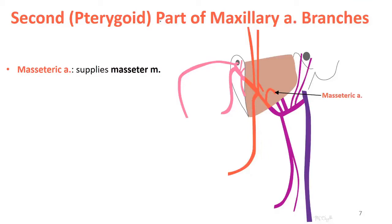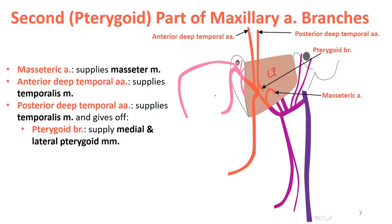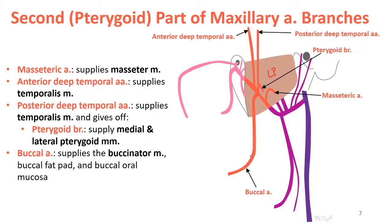Moving to the second part, it is either superficial or deep to the lateral pterygoid muscle — here it is superficial. Most branches of the second part supply the muscles of mastication: the masseteric artery to the masseter, anterior and posterior deep temporal arteries deep to the temporalis, pterygoid branches — often from the posterior deep temporal artery as well as from the main maxillary artery — to the medial and lateral pterygoid muscles, and the buccal artery, which heads more inferiorly to supply the buccinator muscle and surrounding area.